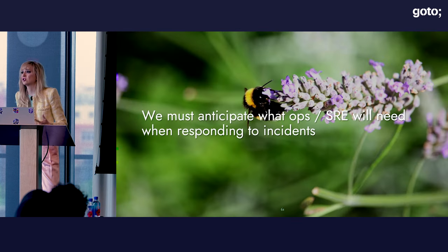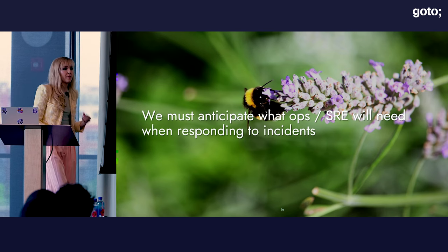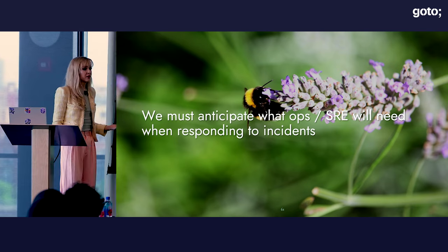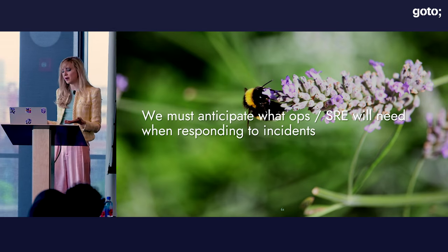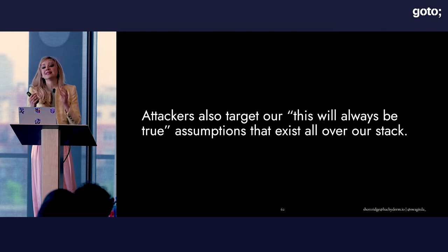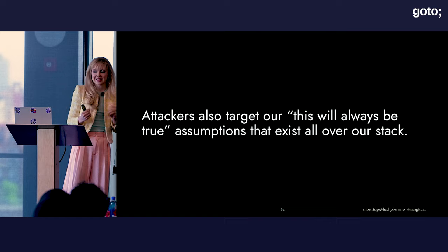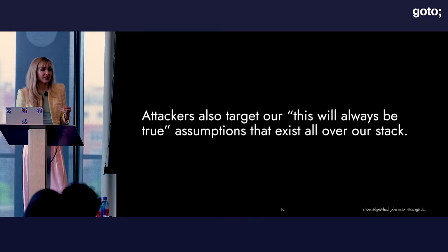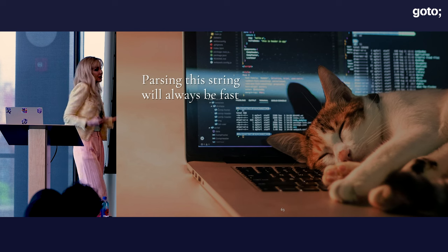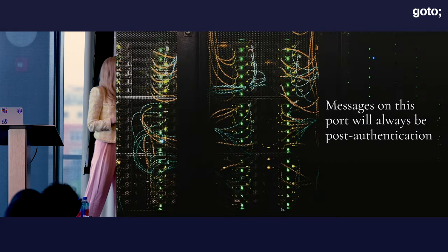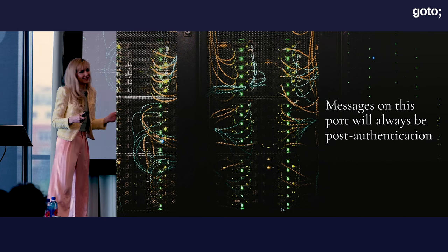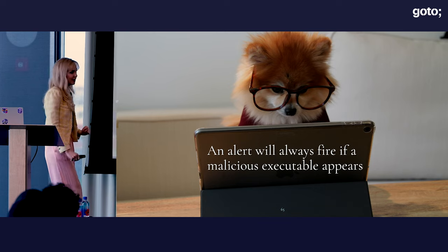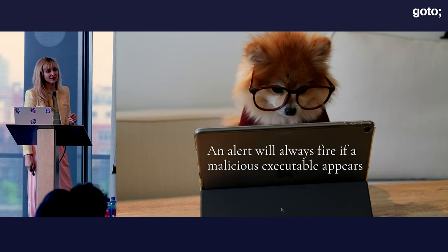When building components that will run as part of big distributed systems, part of anticipating scale is thinking about what operators will need during incidents. If it takes an on-call engineer hours to figure out that the reason for sudden service slowness is a SQLite database that nobody knew about, that's going to hurt your performance objectives. Anticipating scale also matters a lot for resilience against attacks, because attackers love to challenge our TWABT assumptions — they can manifest in every part of your stack at every level: like 'parsing this string will always be fast,' or 'messages at this port will always be post-authentication,' or 'an alert will always fire if a malicious executable appears.'